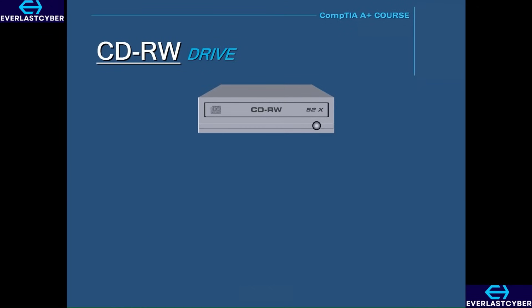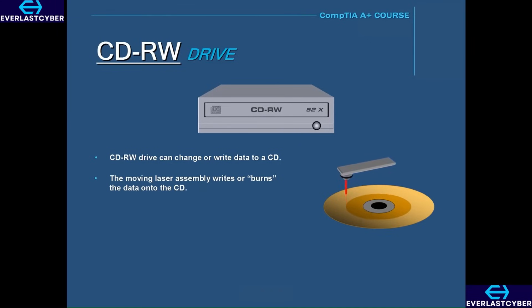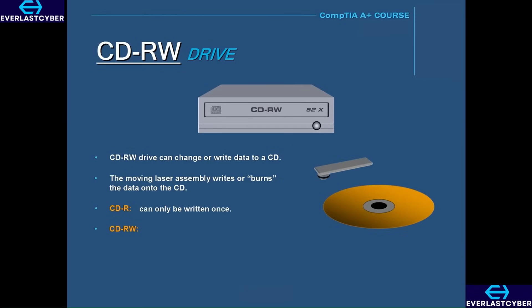A CD-RW drive can change or write data to a CD. It has a moving laser assembly that writes or burns the data to a CD. There are two different kinds of CDs that can be written to: a CD-R, which stands for CD recordable, and a CD-RW, which stands for CD rewritable. CD-Rs can only be written to once, but a CD-RW allows data to be rewritten multiple times.